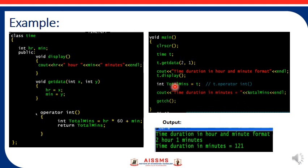To convert from class type to built-in type, we need an operator casting function. Here we create a built-in data type variable total_minutes and assign it the value t, where t is the class data type. This is conversion from class data type to built-in type.